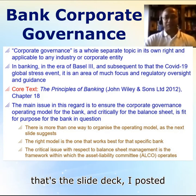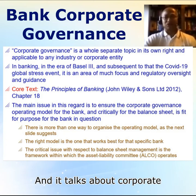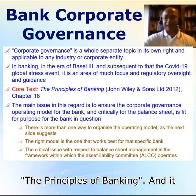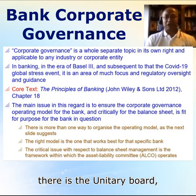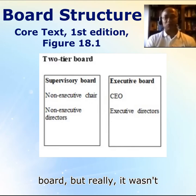I posted this slide deck earlier this month and it talked about corporate governance. It also referred to the core text from the BTRM program, which is 'Principles of Banking,' and it showed the approach to board structures in different countries: the unitary board — the Anglo-Saxon model — and the continental European model, the two-tier board. But that wasn't really what I wanted to dwell on.